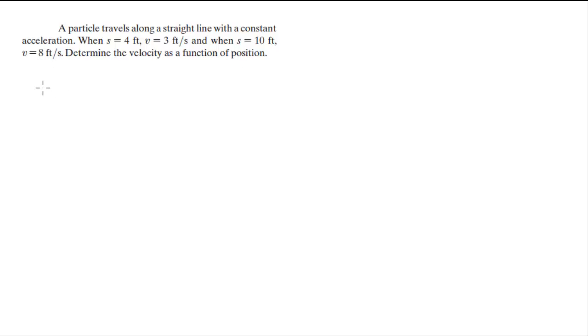Now the formula that you should use for this problem is v squared is equal to v naught squared plus 2a times s minus s naught. It's the formula we're going to use. We're just going to plug in the numbers.